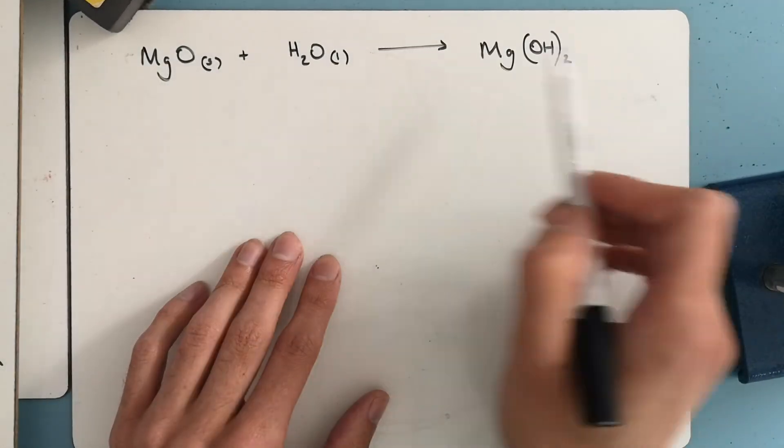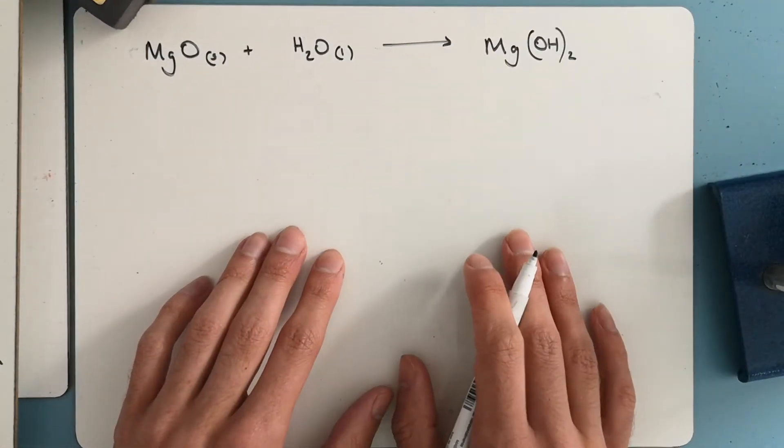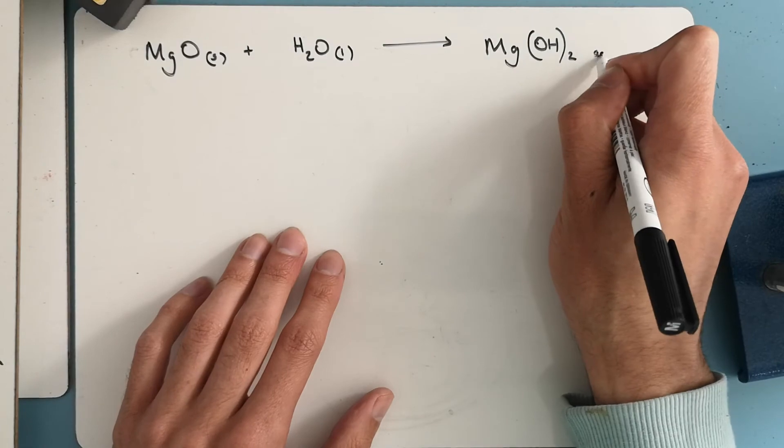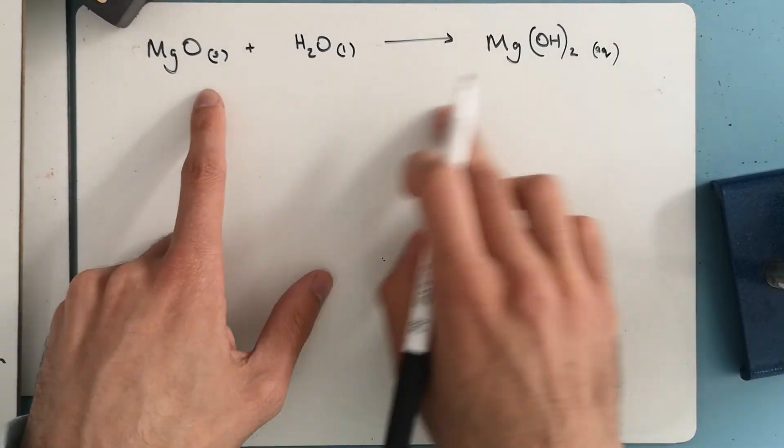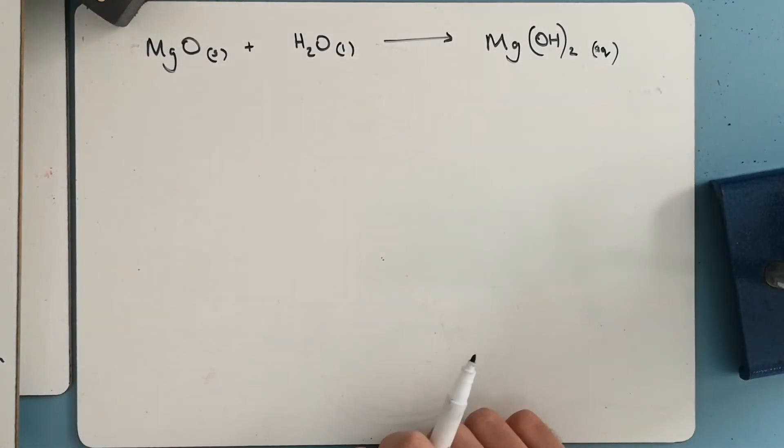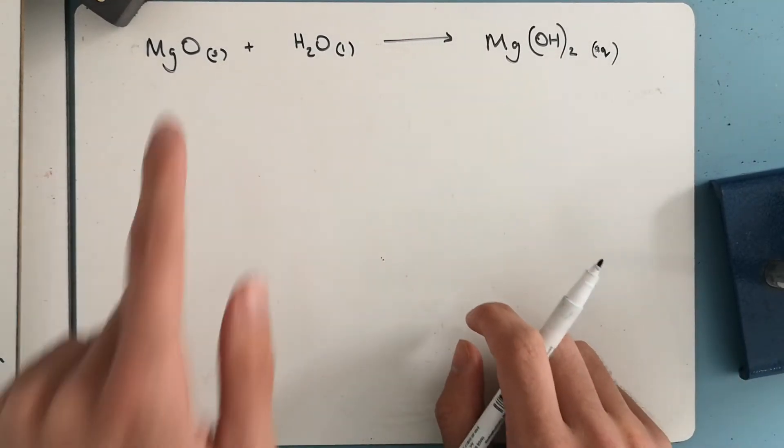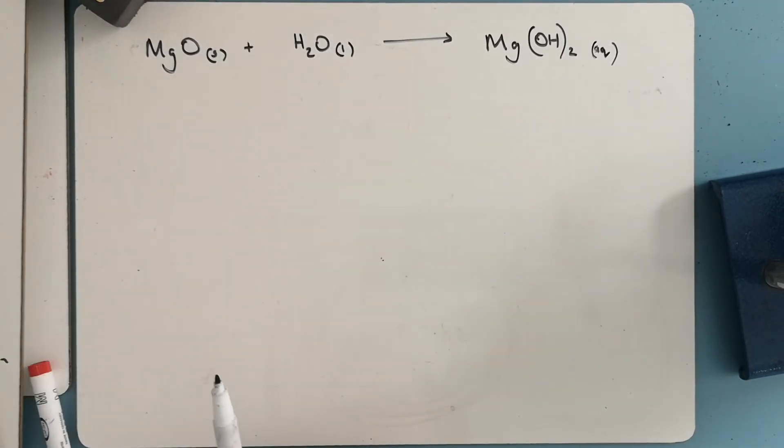And I've got one, two oxygen, two oxygen, two hydrogens, two hydrogens, and one magnesium, so that's balanced. And this will be aqueous. So if you were to do this practical, you'd notice this dissolving. And one of the observations you make here is that the solid disappears.